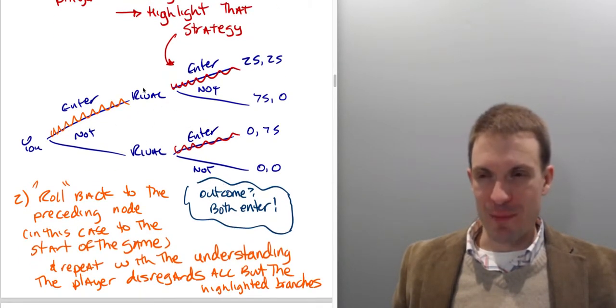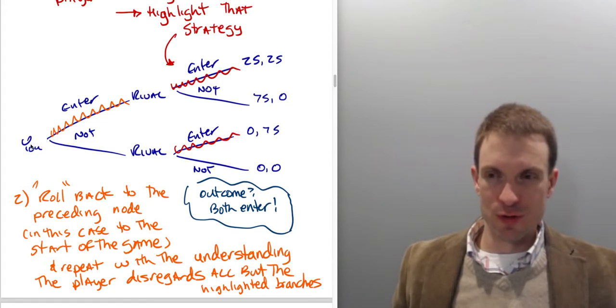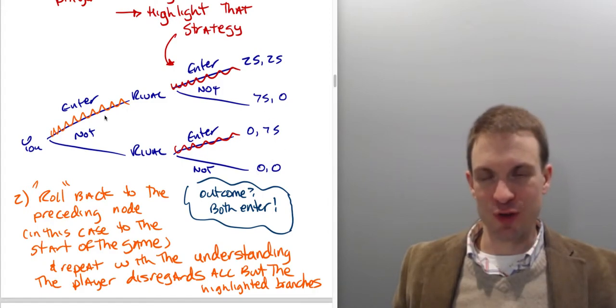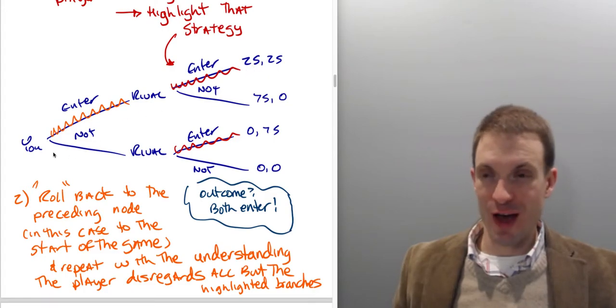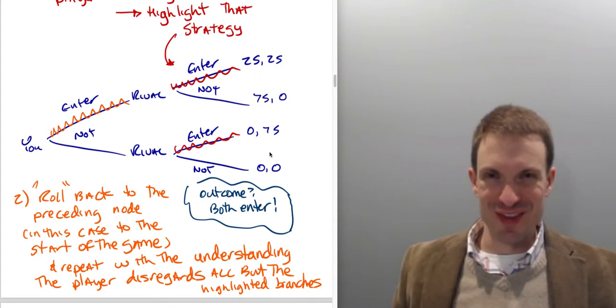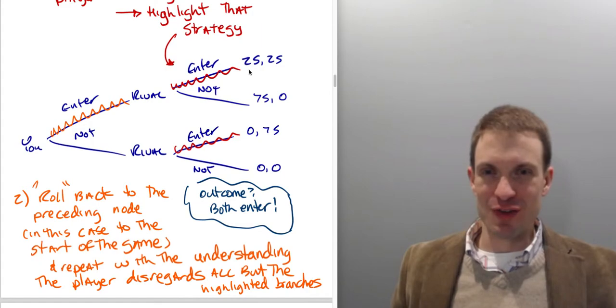So now we're going to wrap back to the beginning of the game. We're going to see, what am I going to do? Looking forward, if I enter, I'm going to get a payoff of $25,000. If I don't enter, I'm going to get a payoff of $0. Notice, I'm ignoring this $75,000 and this $0 because it's not going to happen. Because I know that if I enter, the rival's going to enter, I get $25,000. If I don't enter, rival's going to enter and I get $0. I would rather get $25,000 than $0, so I'm going to enter.